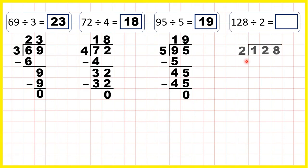Now 128 divided by 2. Well if we look at the first digit, 1 is less than 2, and when this happens we can take the first 2 digits together. So we can divide 12 by 2. The reason for that isn't because we have a 3-digit number — it's because when we look at our first digit, it's less than the divisor. So let's start with 12 divided by 2.